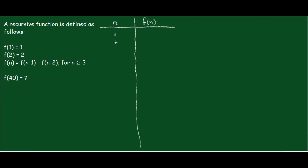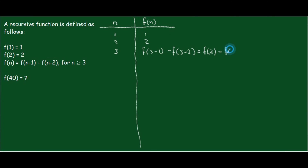We are given f(1) = 1 and f(2) = 2. Now, for n = 3 or greater, f(3) equals f(3-1) minus f(3-2), which gives us f(2) minus f(1). We know what both of those are, so that's 2 minus 1, which equals 1.